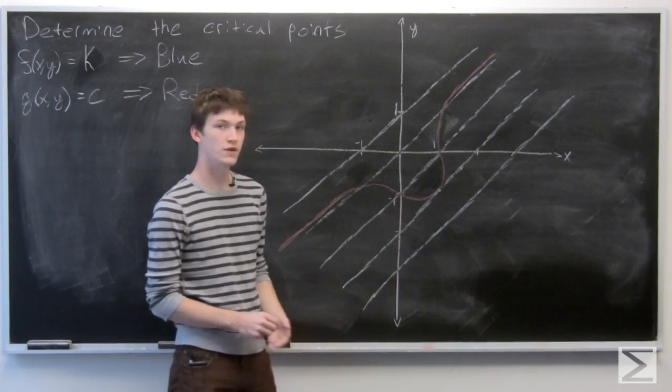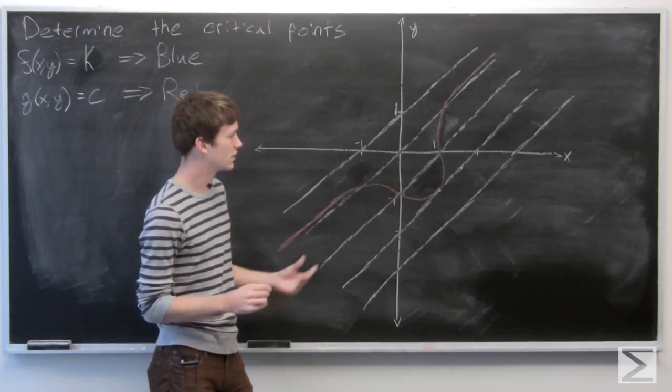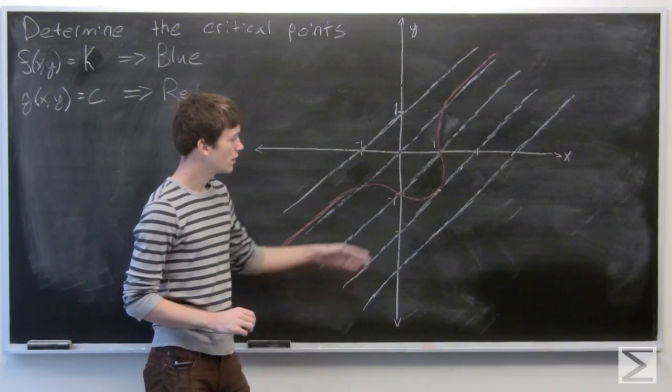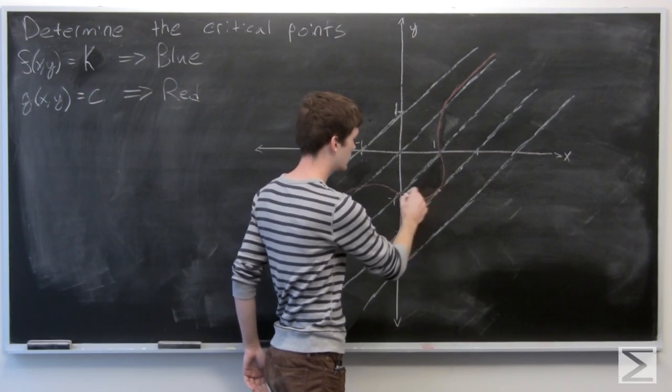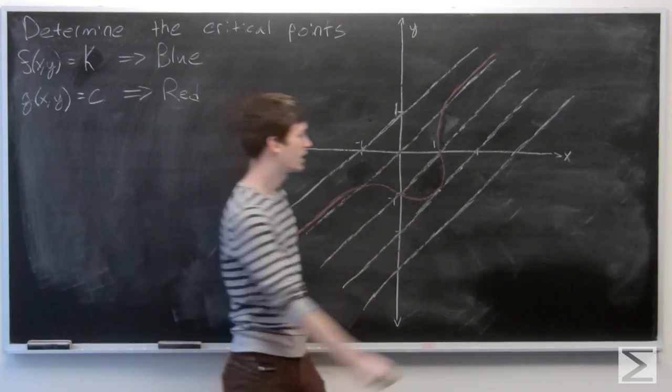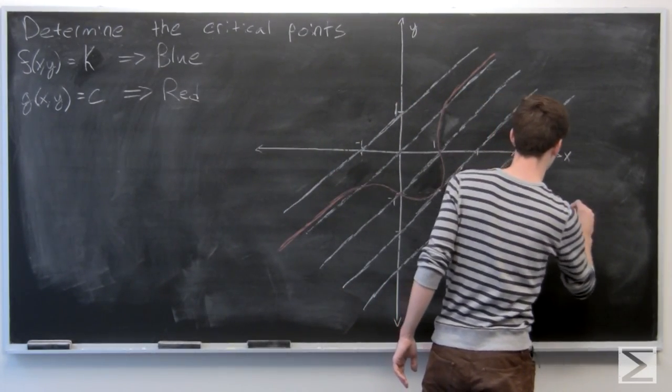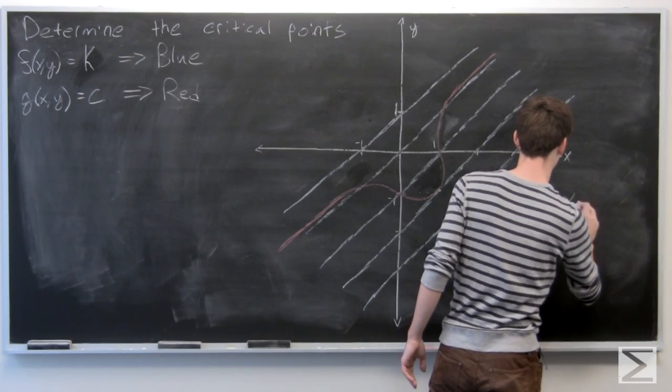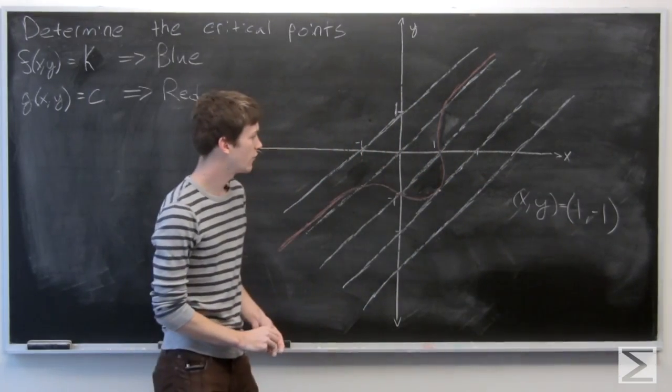But we're looking for points where it just glances off of our constraint function, because then it will be optimized. And we see that there appears to be just such a glance-off right at the point (x,y) equals (1, -1).